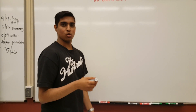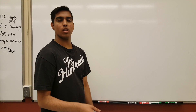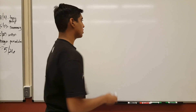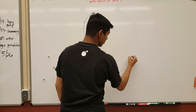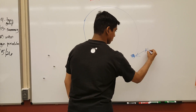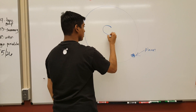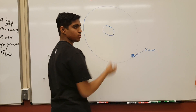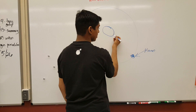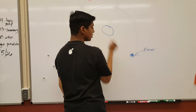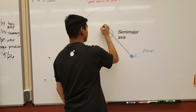For starters, I'm going to talk about the orbitals of both the planet and the star it revolves around. The sun would have an orbital too, the same shape as the planet, and they will always be on the opposite ends of each other. So since the planet is over here, the sun will have to be on the other side.